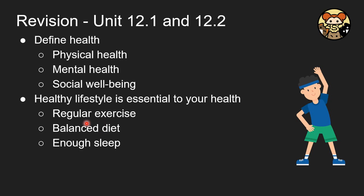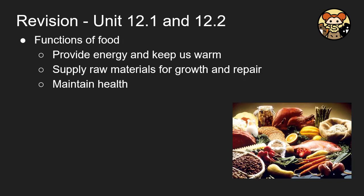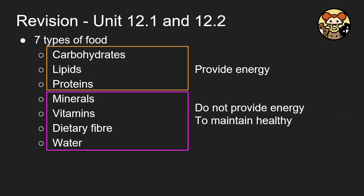Examples of a healthy lifestyle include regular exercising, a balanced diet, and enough sleep. Next, we talk about the function of food. Food provides energy to keep us warm, supplies raw materials for growth and repair, and maintains health. There are generally seven types of food: carbohydrates, lipids, proteins, minerals, vitamins, dietary fibers, and water.